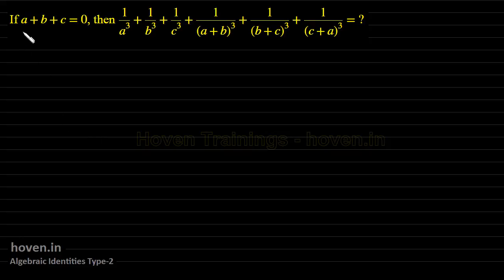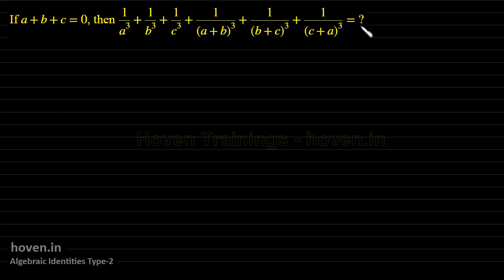The problem says: if a plus b plus c is equal to 0, then 1 by a cubed plus 1 by b cubed plus 1 by c cubed plus this complicated expression is equal to 1. It's all about observation — nothing else.